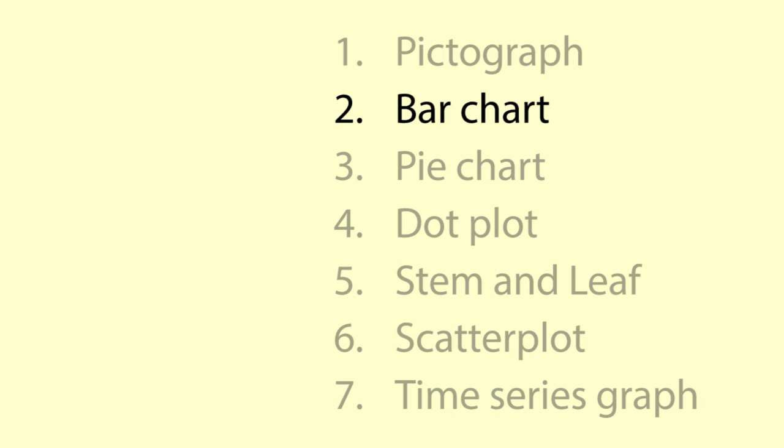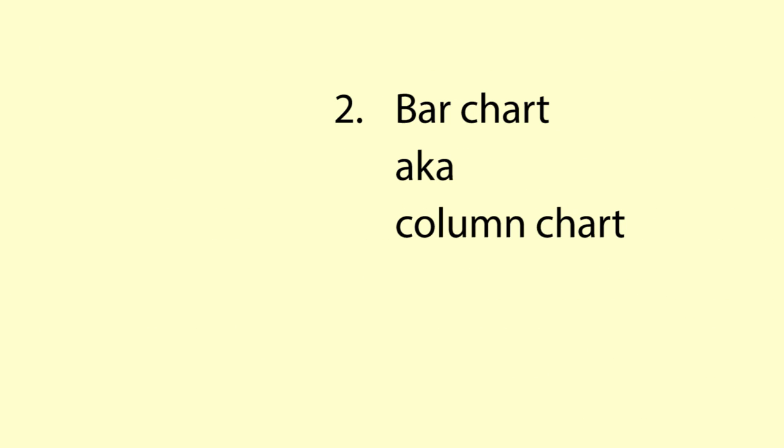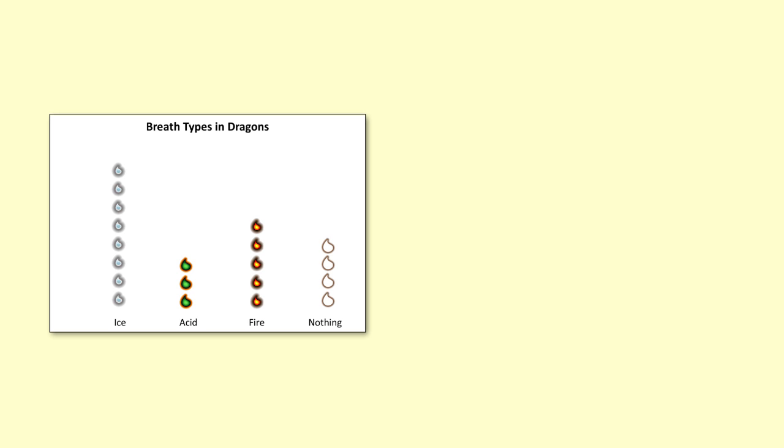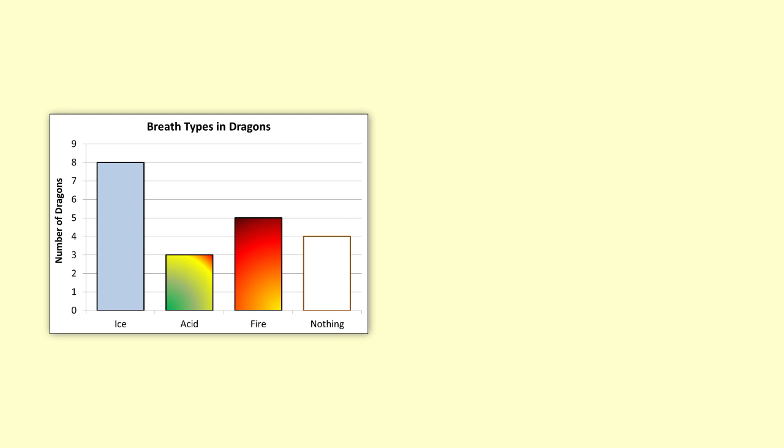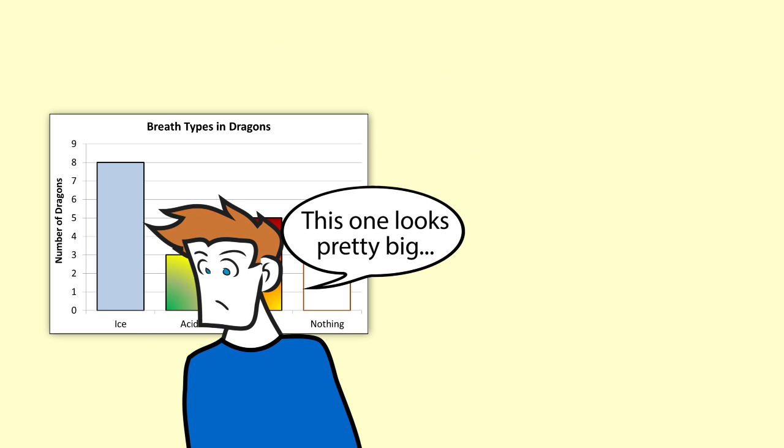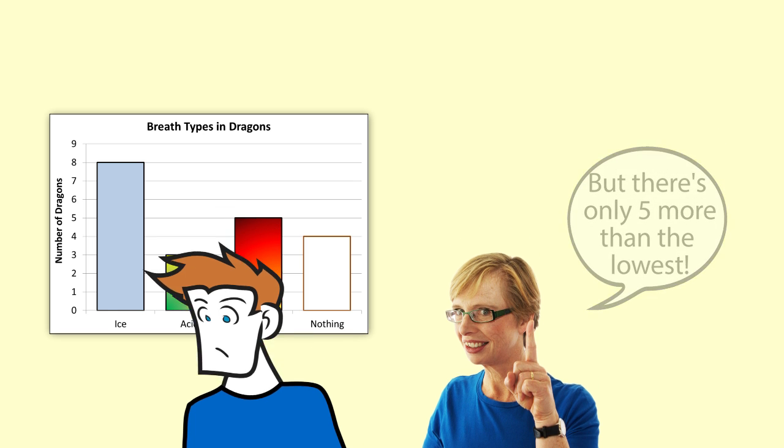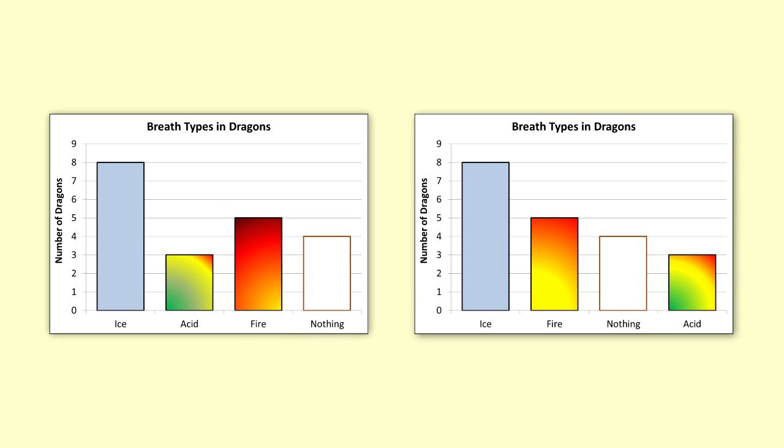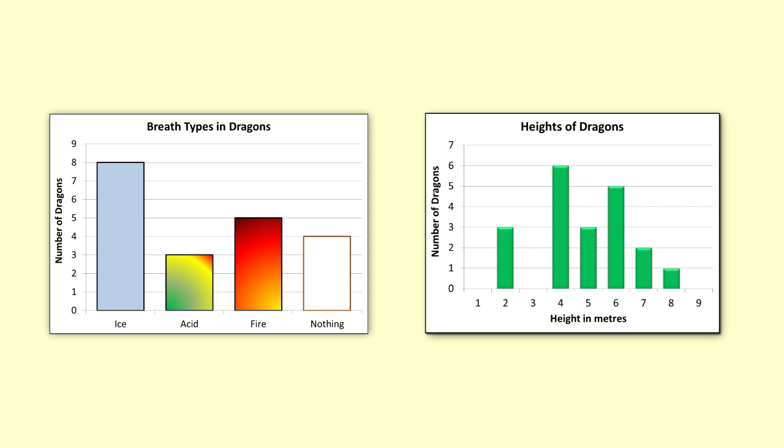Bar chart. This is also sometimes called a column chart. The data we showed in the pictographs can also be represented in a bar chart. In a bar chart, the length or height of the bar represents the number of times that object occurs, or the frequency. On bar charts, it is easy to see which category is the biggest, even when there is little difference. We can order the categories by size to give more information. Bar charts can be used for categorical data and for some numerical data.